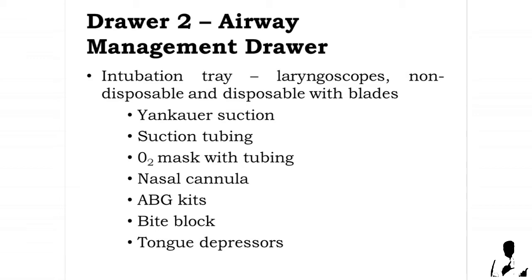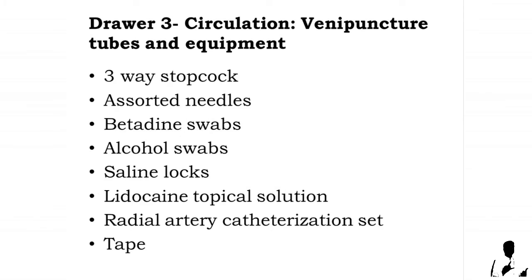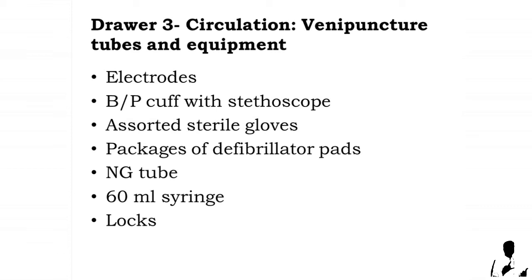Additional airway drawer contents include: Yankauer suction, suction tubing, oxygen mask with tubing, nasal cannula, ABG kits, bite block, and tongue depressors. Drawer 3 contains circulation, venipuncture tubes and equipment: 20mL syringes, 3mL syringes, TB syringes, and intravenous start equipment including 18-gauge, 20-gauge, and 22-gauge cannulas, assorted butterflies, three-way stopcock, assorted needles, betadine swabs, alcohol swabs, saline locks, lidocaine topical solution, and a radial artery catheterization set.